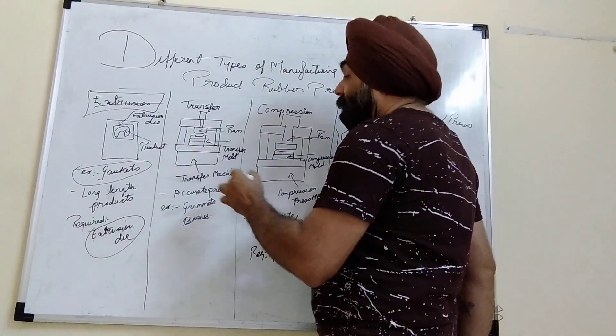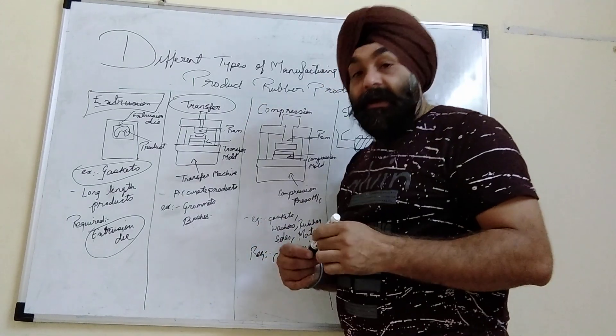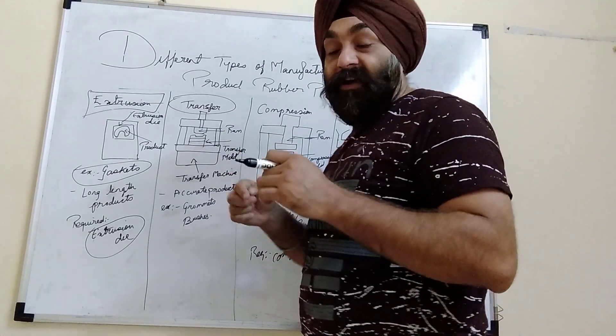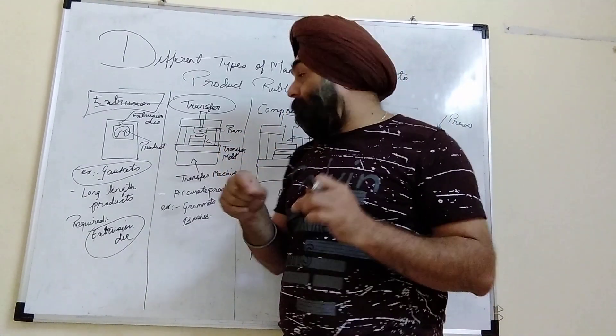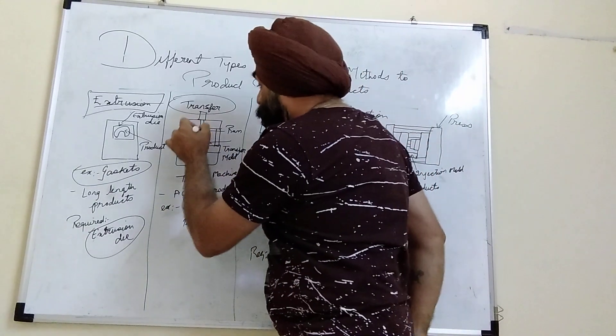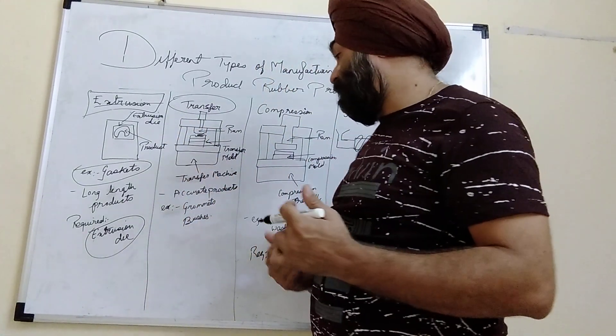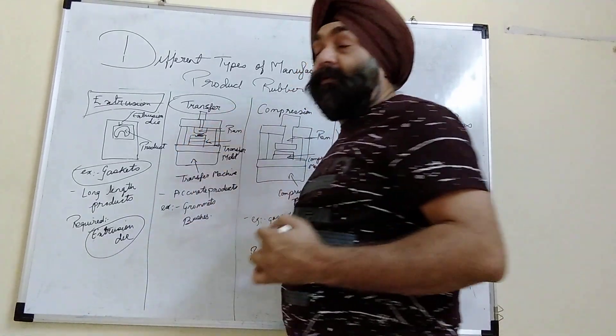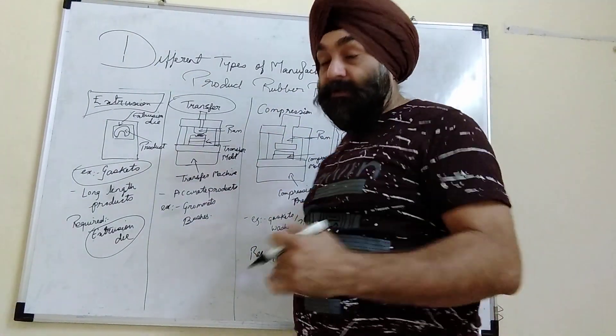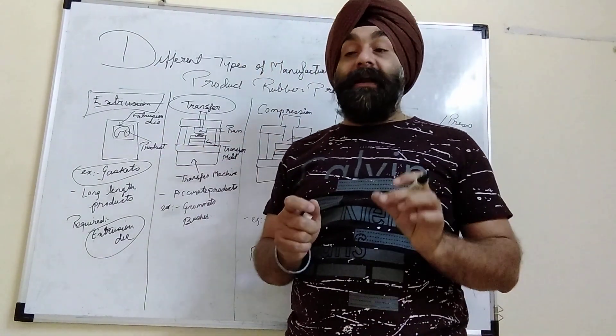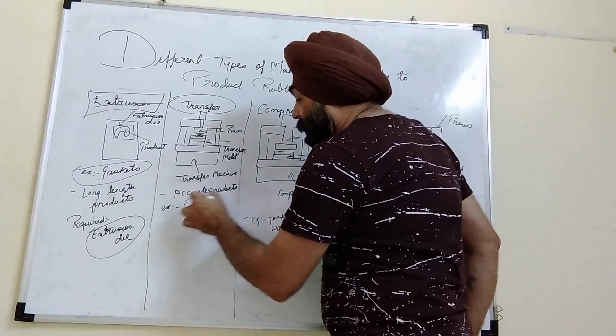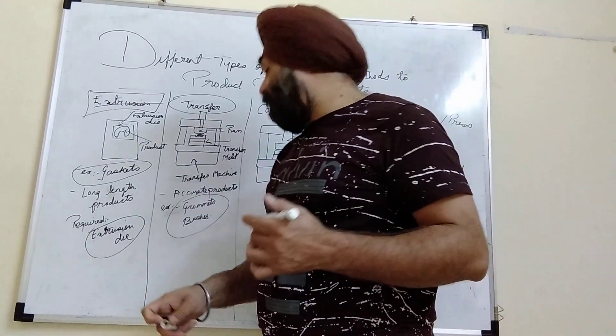Next we have transfer mold. In transfer mold, there is an opening where you can put pre-heated rubber raw material, and then with the help of a ram, this is pressed into the rubber cavities. This transfer mold can be single cavity or multi-cavity and is used where you need accurate products. The best examples are grommets, bushes, or other kinds of components.